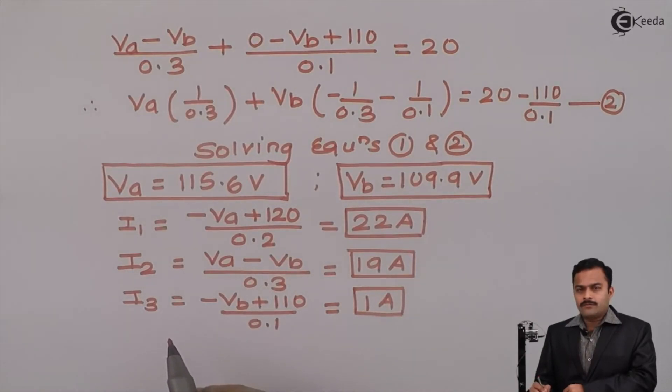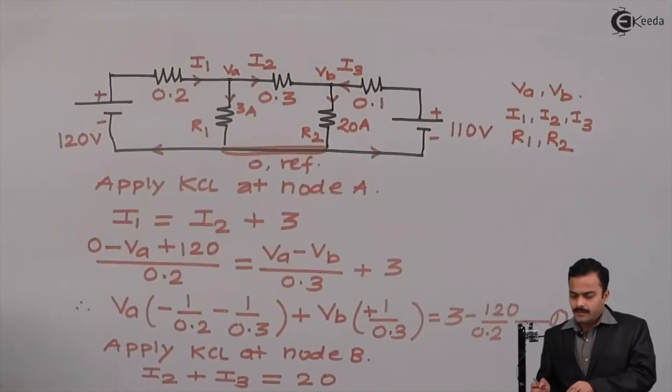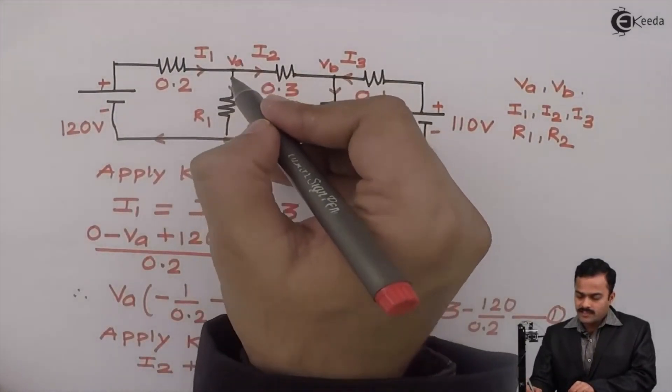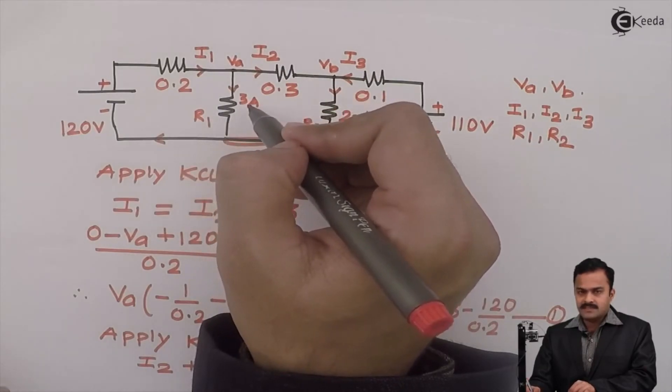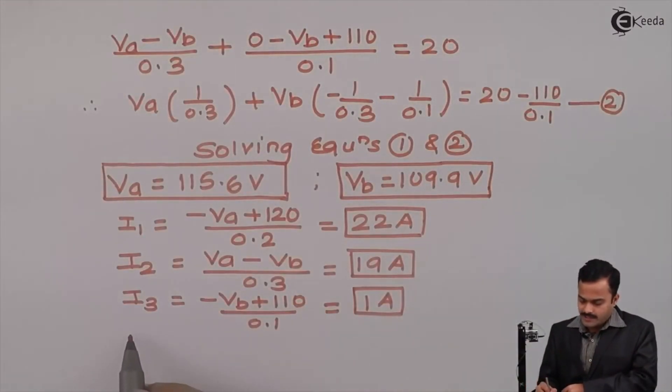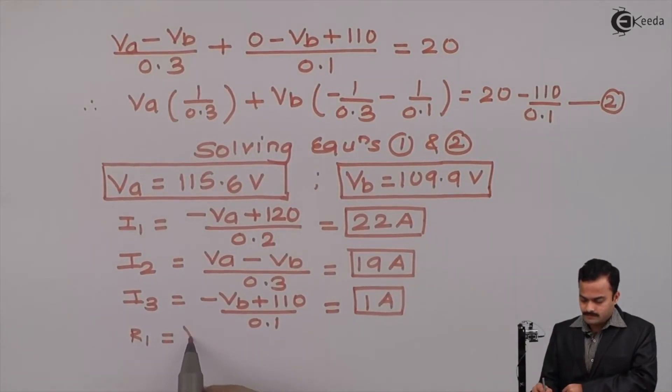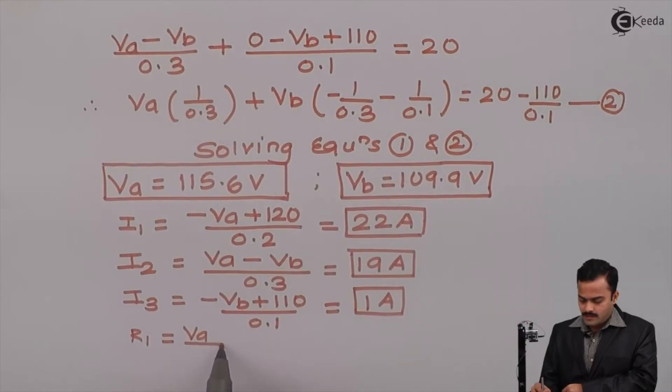Now, we have to find out R1 and R2. It is very simple. Because Va is the voltage across this R1, and the current given is 3 Ampere. So, simply by Ohm's law, I can say R1 equals Va divided by 3.